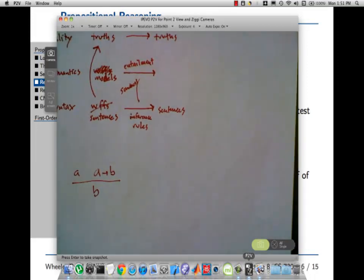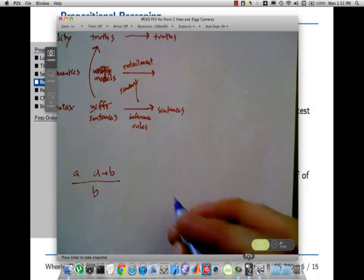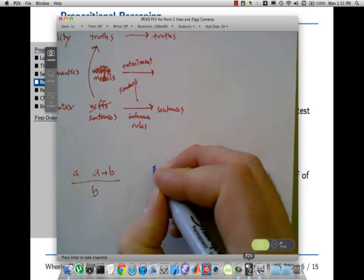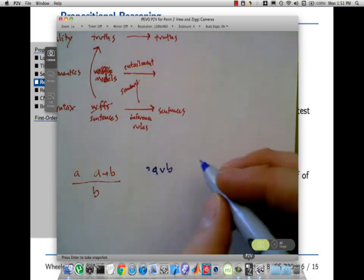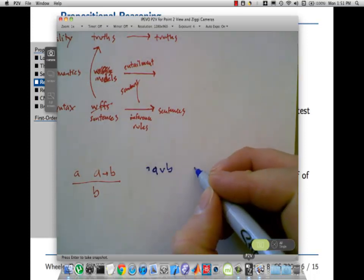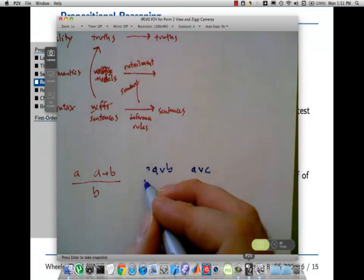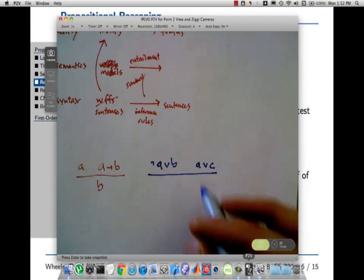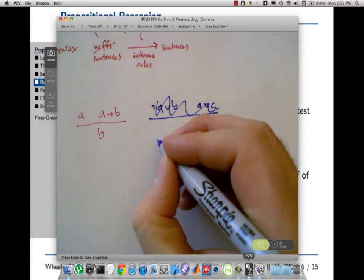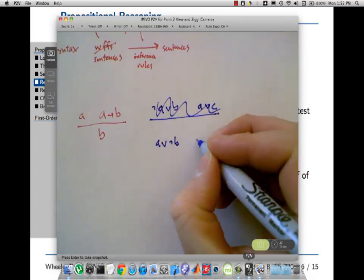So that's modus ponens. Resolution is like the big brother to modus ponens. Does everyone remember how to rewrite implication? How do we rewrite A implies B? Not A or B, exactly. So not A or B. Well let's say we also had A or C. This is resolution. Actually, let me rewrite that in an even prettier way. Let's say A or not B and then B or C.